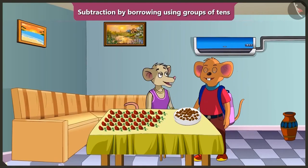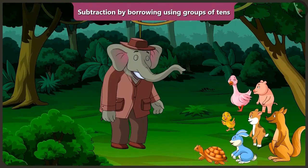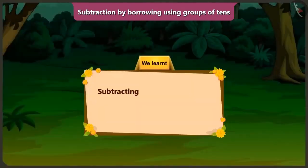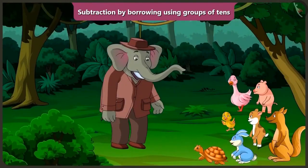Chuchu, would you eat more chocolates? No. If I eat more chocolates, my teeth will get cavities. Yes, you are right. Chichi, let us make a bouquet with these roses. Yes, let us do it. Children, in this video, you have learnt subtracting given numbers in groups of tens with the help of borrowing. In the next video, we will see how Chichi and Chuchu use borrowing for subtractions while making a bouquet of flowers.